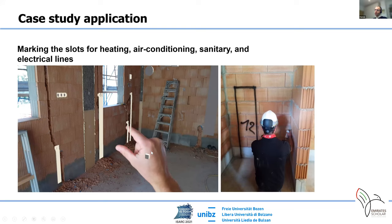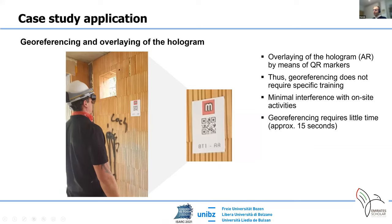On the left side, you see what the foreman sees in the HoloLens by using the Trimble XR10 helmet. On the right side, you see how he marks the slots that need to be opened to place the pipes in the building. To georeference the BIM model, we used QR markers. Georeferencing does not require specific training for the foreman, and we measured that the foreman needs approximately 50 seconds to georeference the BIM model using two markers.